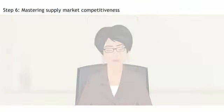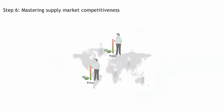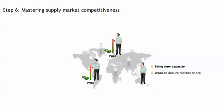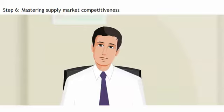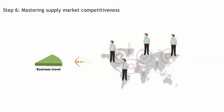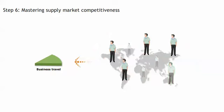The scope for new entrants stands for how easy it is to enter the supply market. A new entrant will bring new capacity, work to secure market share, and put pressure on price. In the case of business travel, there are four global travel agencies, so the chances a new travel agency will enter this market is rather small.